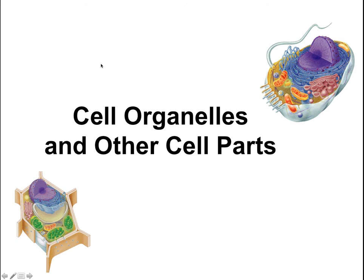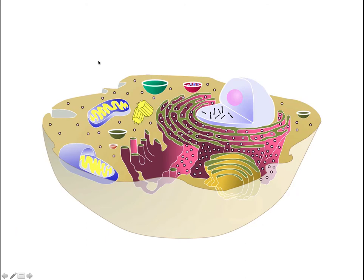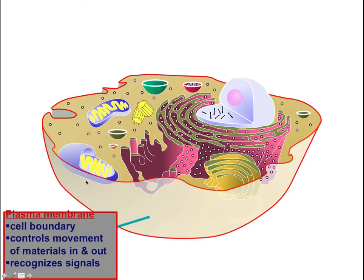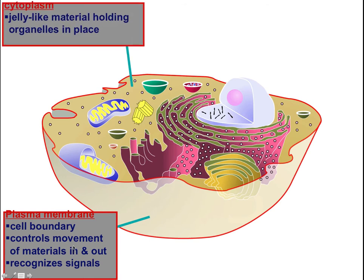Now we're going to talk about cell organelles and other cell parts. Remember last time we talked about how cells have a plasma membrane — every single cell has a plasma membrane no matter what type of cell it is. The plasma membrane serves as a boundary for the cell to control what goes in and what goes out, to separate the inside from the outside. We also have the cytoplasm, which is the jelly-like material on the inside.